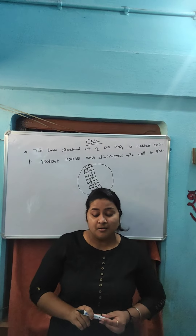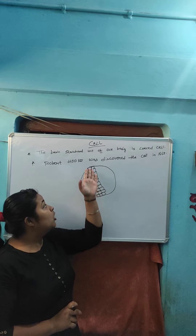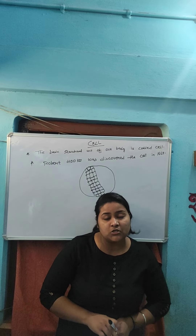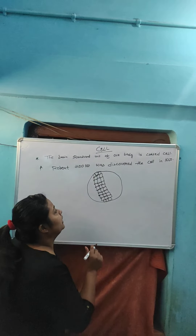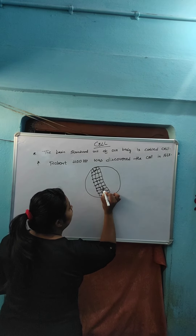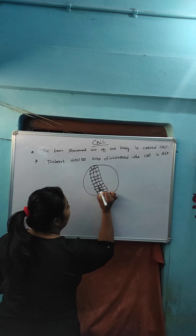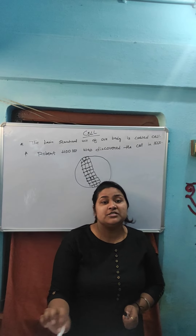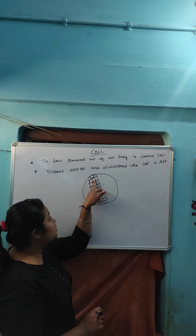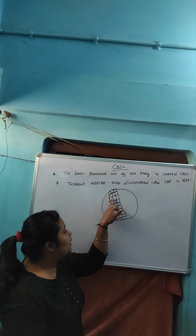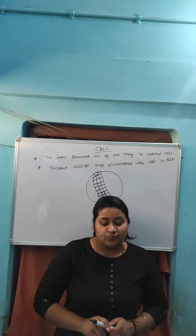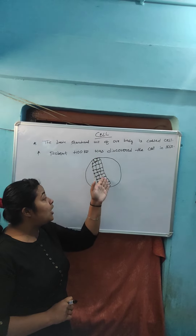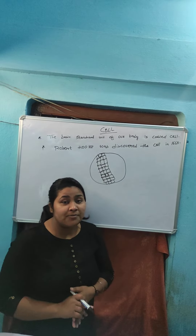He observed under a microscope that the boxes appeared like a honeycomb. He also noticed that one box was separated from another by a wall or partition. Hooke coined the term 'cell' for each box. What Hooke observed as boxes or cells in the cork were actually dead cells.